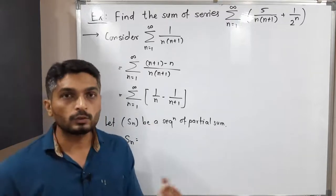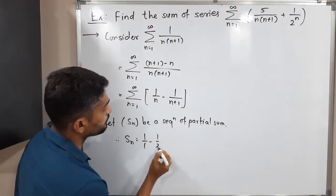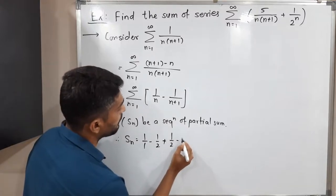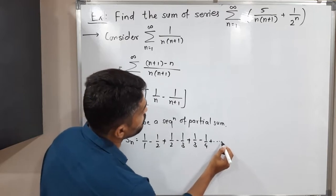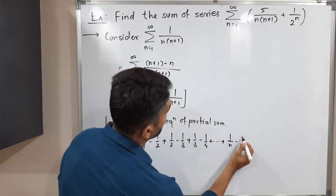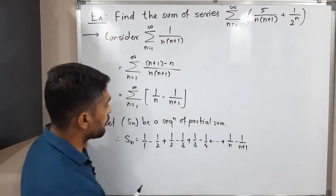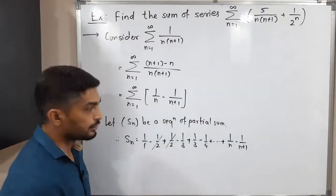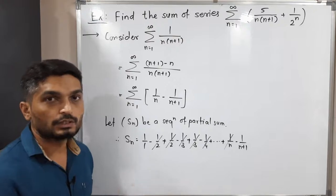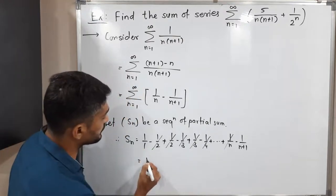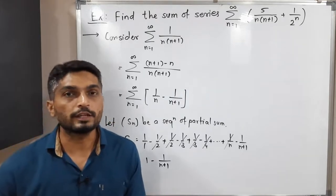Let us put n = 1, 2, 3, and so on. If n = 1 we have 1/1 minus 1/2; if n = 2 we have 1/2 minus 1/3; if n = 3 we have 1/3 minus 1/4; and so on. The last term will be 1/n minus 1/(n+1). We can cancel many terms: the 1/2 cancels, 1/3 cancels, 1/4 cancels, and so on, and 1/n also cancels with a previous term. So only the first and last terms remain: S_N = 1 minus 1/(n+1).